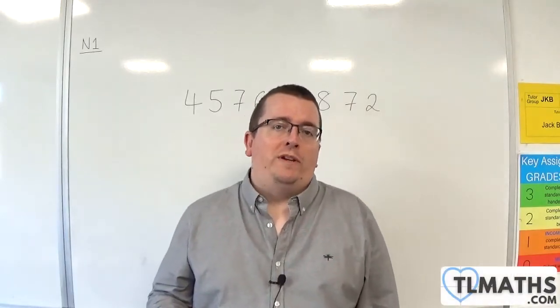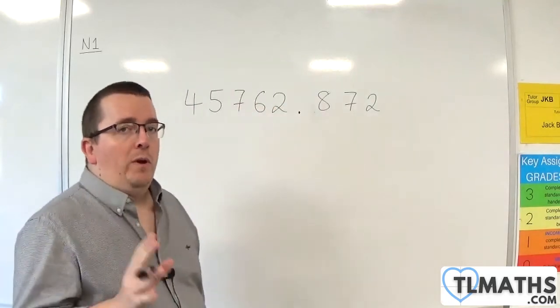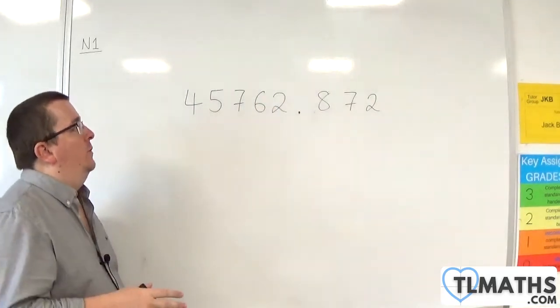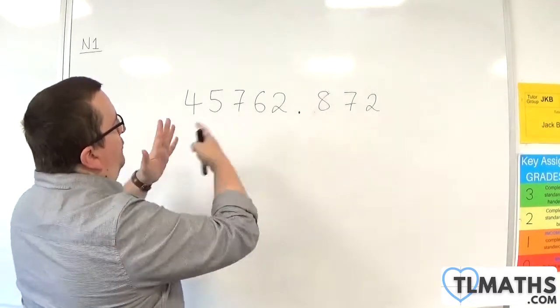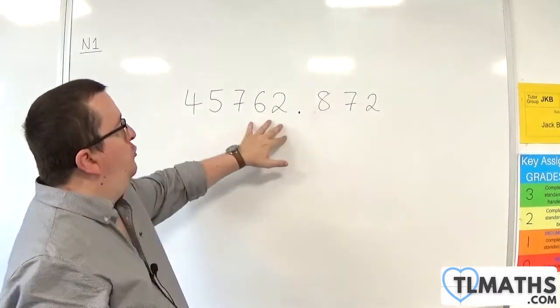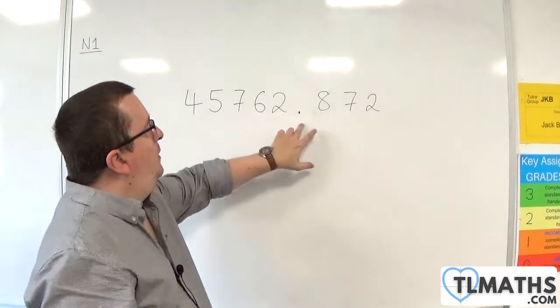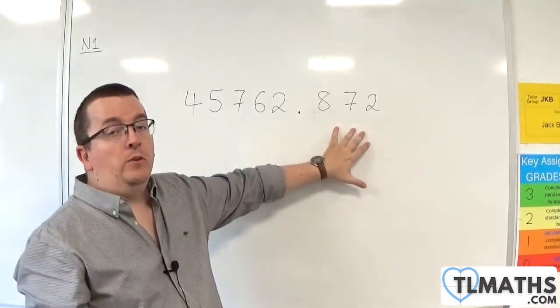Now, before we get into ordering decimals, I just want to do a quick video on place value. So, here is a number: 45,762.872.